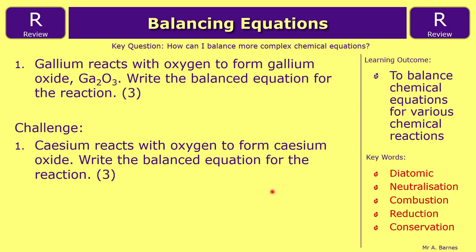Hopefully that's everything you need to know about balancing reactions involving oxygen and metals. There are a couple of questions for you — one challenge and one normal. The first is gallium reacts with oxygen to form gallium oxide, Ga2O3 — write the balanced equation for the reaction. The challenge is caesium reacts with oxygen to form caesium oxide — remember how we found the formula; look at the video if you're not sure. I'll put that link in the credits at the end.